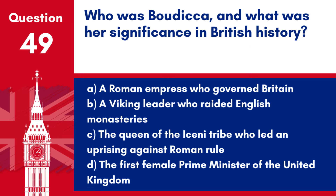Question 49. Who was Boudicca, and what was her significance in British history? a. A Roman Empress who governed Britain. b. A Viking leader who raided English monasteries. c. The Queen of the Iceni tribe who led an uprising against Roman rule. d. The first female Prime Minister of the United Kingdom. Answer: c. Boudicca is significant in British history as a symbol of resistance against Roman occupation, leading a revolt that temporarily pushed back Roman forces.